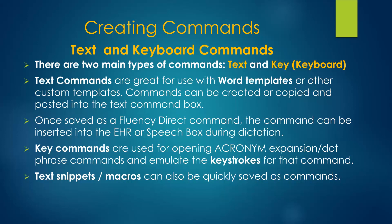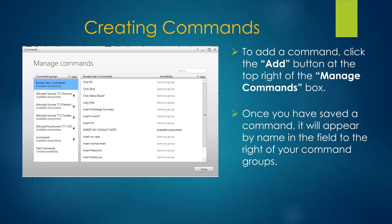The two main types of commands in Fluency Direct are text and key. Text commands can be used as templates, and key commands can be used similarly to dot phrases, and also to recreate keyboard strokes. Text snippets and macros may also be saved as commands. Your commands are visible in the main window of the Manage Commands box. Click the Add button to create a new command.